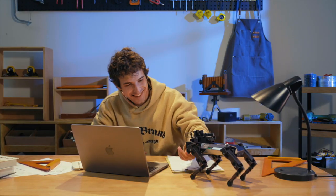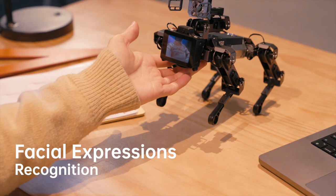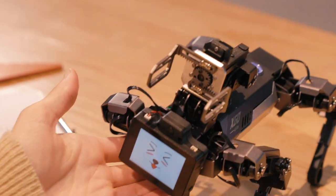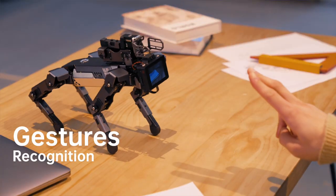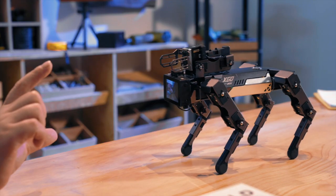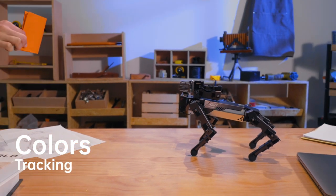The operation module includes buttons, speakers, a screen, a UI interface, and a fully functional AI camera with upgraded features. These features allow XGO 2 to recognize your facial expressions, gestures and colors and respond to you like a real dog.